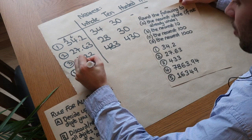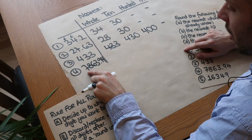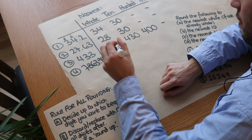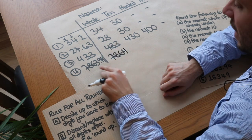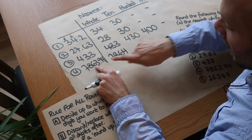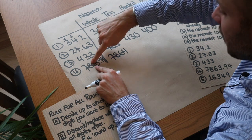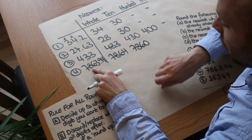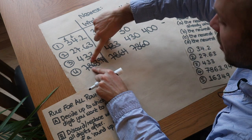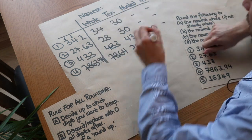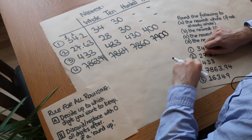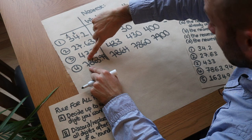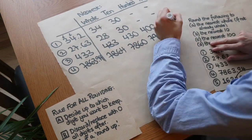Fourth number: 4863.94. To the nearest whole: keep up to the units digit - three - check the next digit, nine. That's greater than or equal to five, so three goes up to four: 4864. To the nearest ten: keep up to the tens digit - six - check the next digit, three. Not greater than or equal to five, so six stays: 4860. To the nearest hundred: keep up to hundreds digit - eight - check the next digit, six. Yes, so eight goes up to nine: 4900. To the nearest thousand: keep up to thousands digit - seven - check the next digit, eight. Yes, so seven goes up to eight, everything after becomes zeros: 5000.